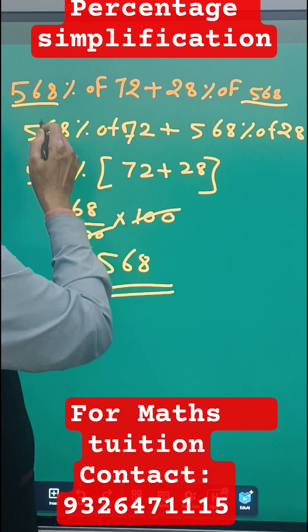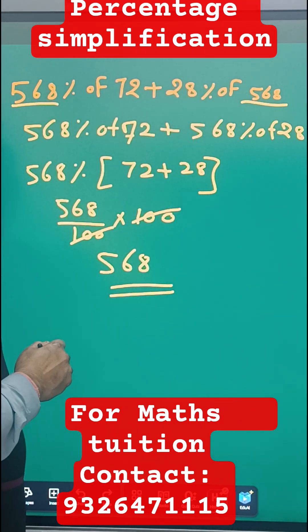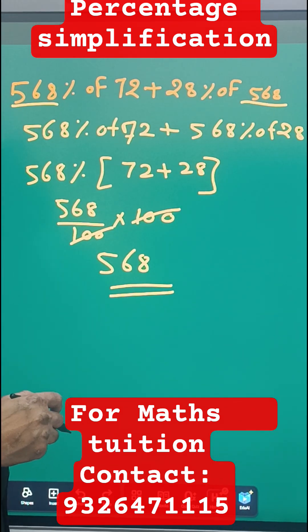568% of 72, just take the common and you can get the answer in one step.